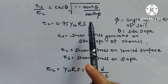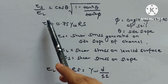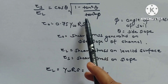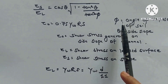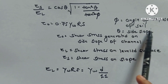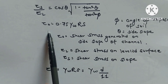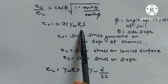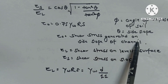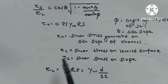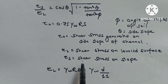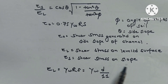Tractive force formula: V = (1 − tan²θ/tan²φ)^(1/2), where φ is angle of repose of soil and θ is side slope. τ₀ = 0.75γ_w·R·S, where τ₀ is shear stress on side slope, τ_l = γ_w·R·S is shear stress on level surface, and τ_s is shear stress on slope. Also τ_l = γ_w·D/11.